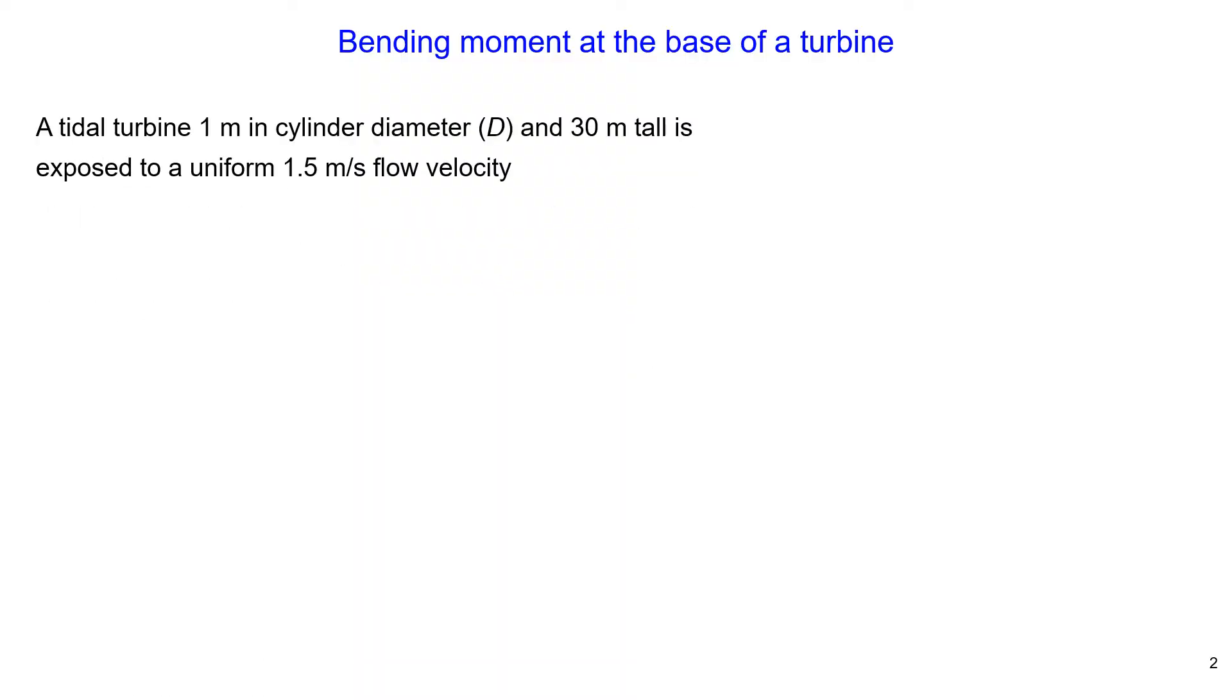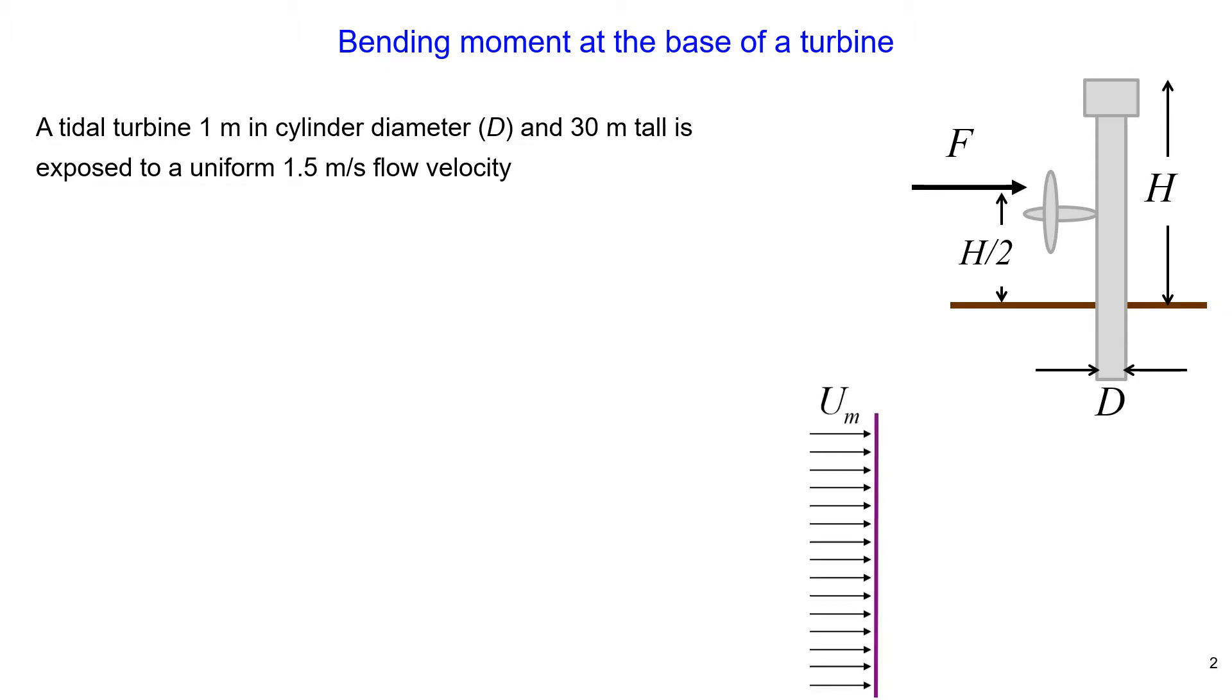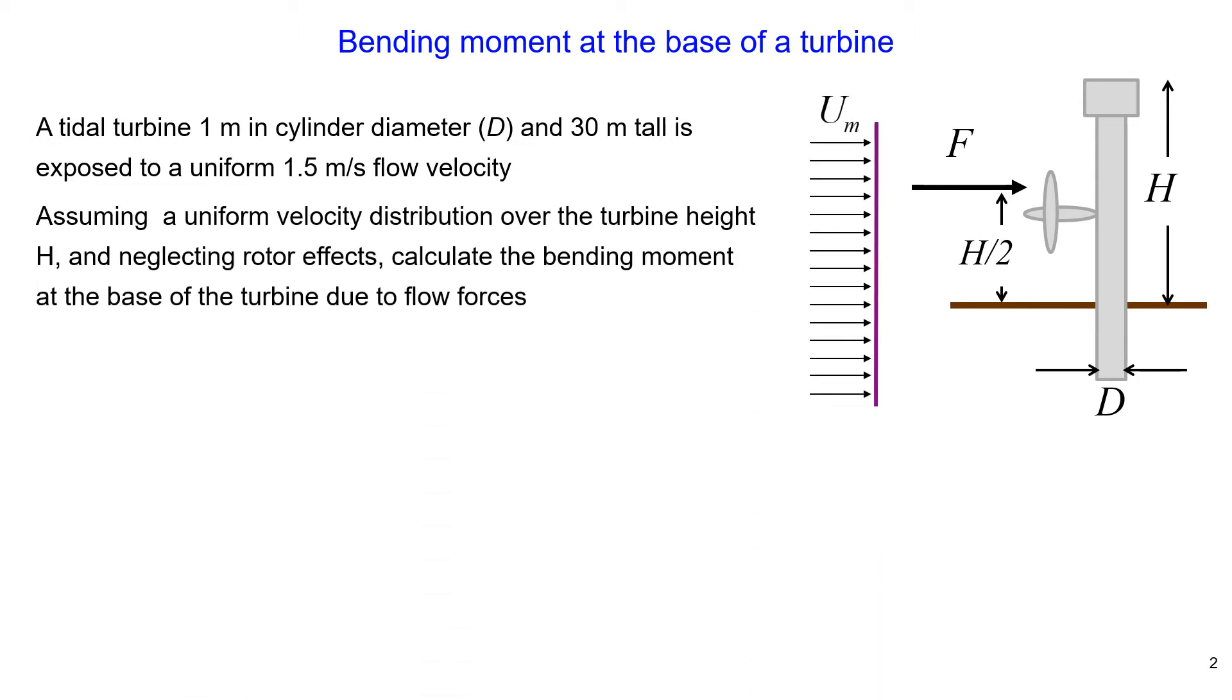The problem states: a tidal turbine 1 meter in cylinder diameter and 30 meters tall is exposed to a uniform 1.5 m/s flow velocity. Assuming uniform velocity distribution over the turbine height H and neglecting rotor effects, we need to calculate the bending moment at the base of the turbine due to flow forces.